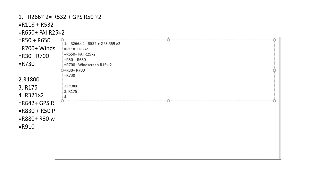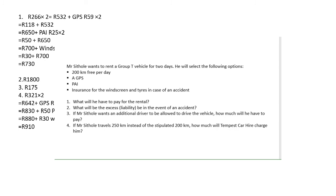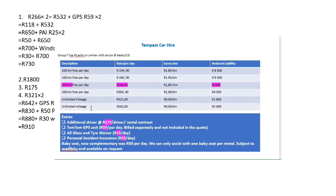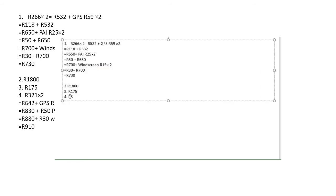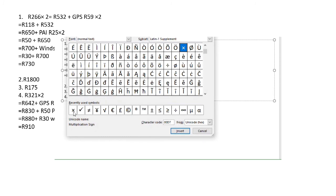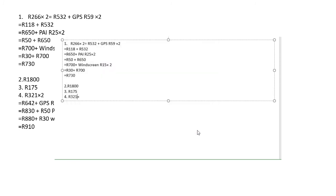Number four: if Mr. Sitolo travels 250 km instead of the stipulated 200 km, how much will he have to pay? We look at the unlimited mileage option — Mr. Sitolo would have to pay 321 rands. So 321 rands multiplied by 2 equals 642 rands.